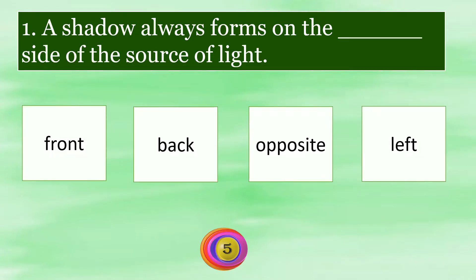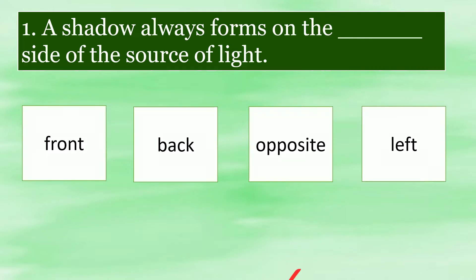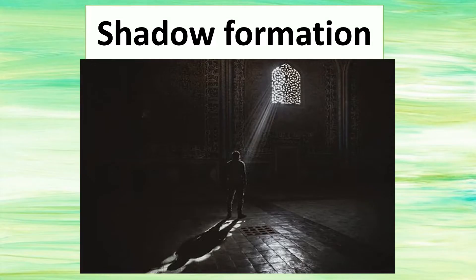A shadow always forms on the opposite side of the source of light. Here we can see how the shadow is formed on the opposite side of the source of light.